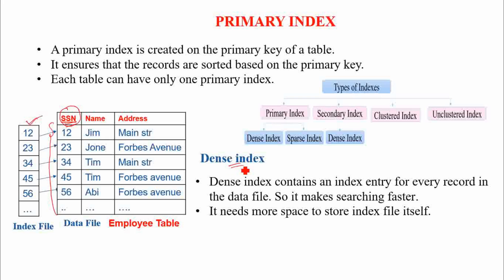A dense index contains an index entry for every record in the data file. If you look at this index file, it is known as a dense index because it contains an index entry for each and every record in this table. It makes searching faster, but the drawback is that when more data records are stored in the table, the index file size also grows bigger, so it occupies more space. That is the drawback of a dense index file.